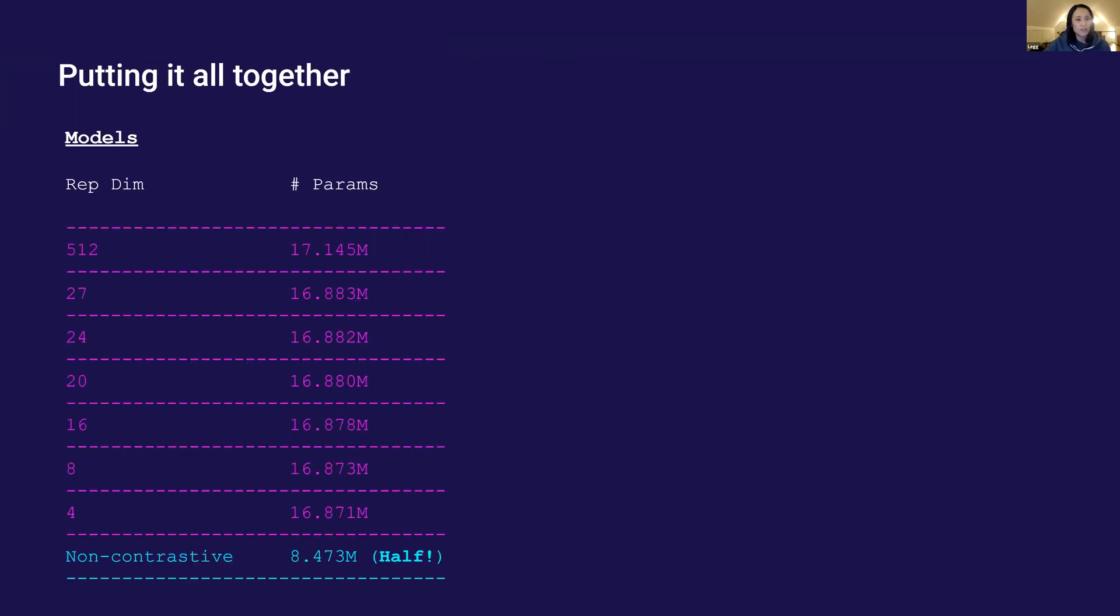Putting all of this together, I have seven contrastive models with vector representation dimension from 512 down to 4. They all have 17 million parameters and a non-contrastive model with half the size.